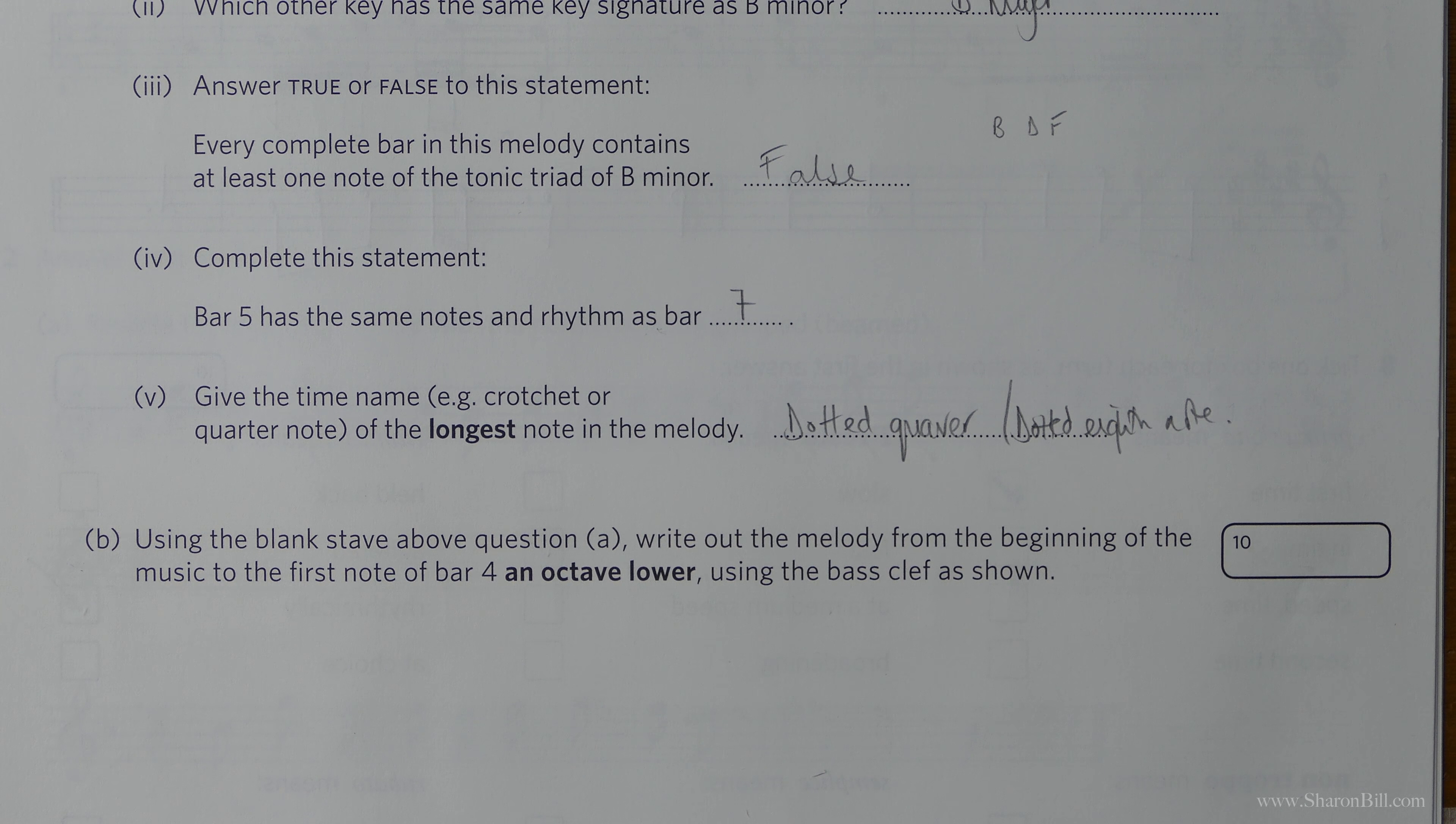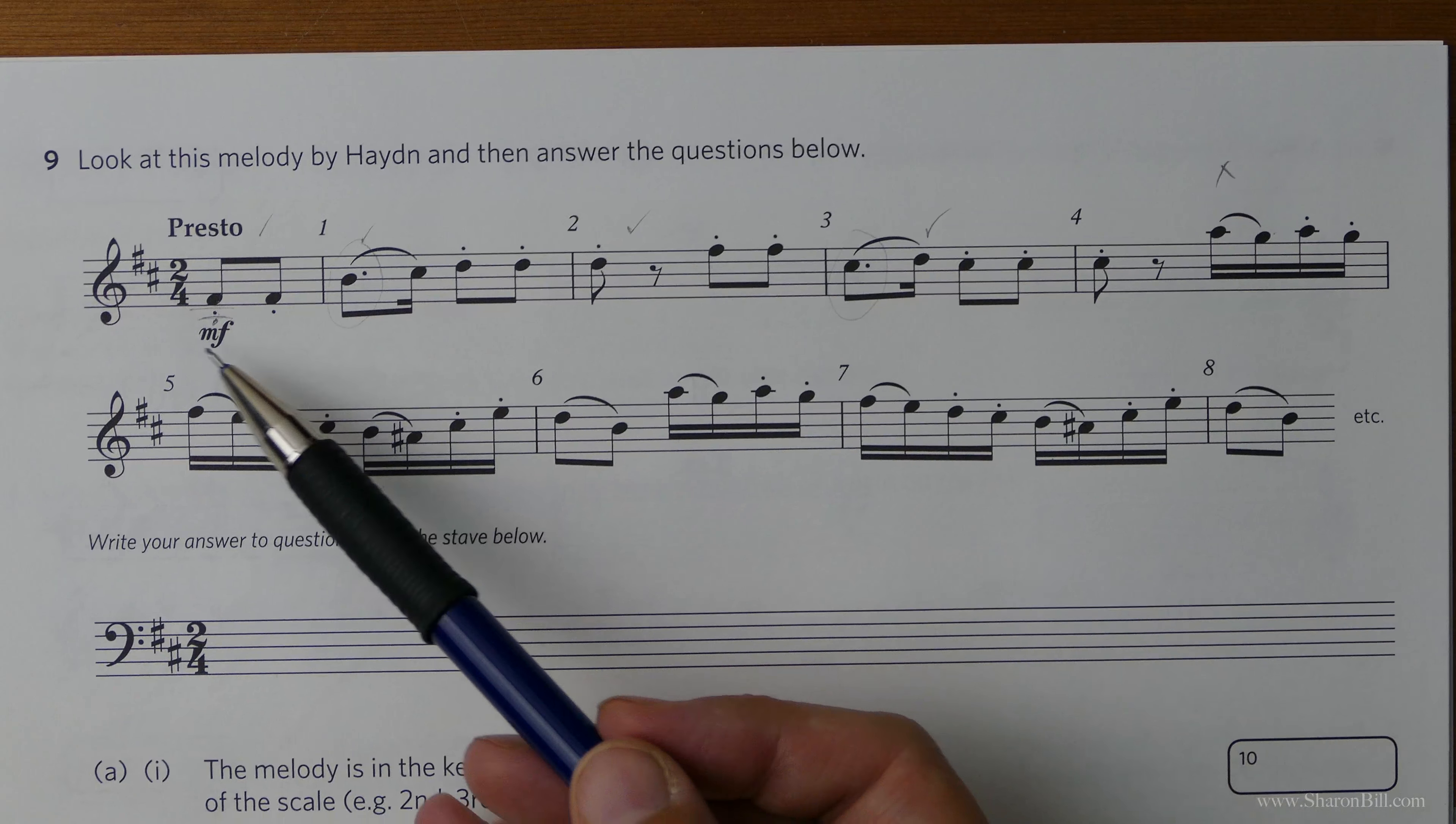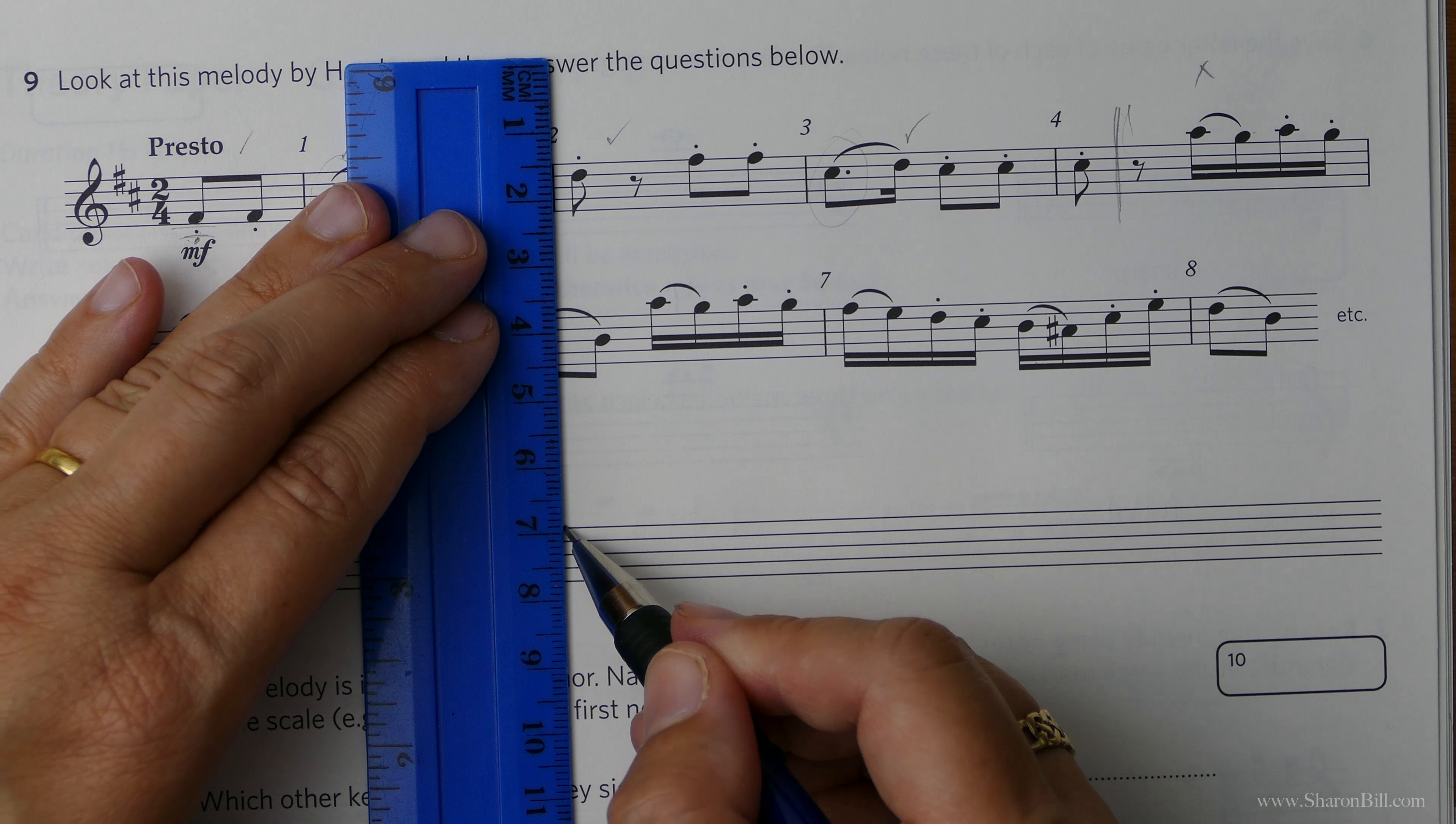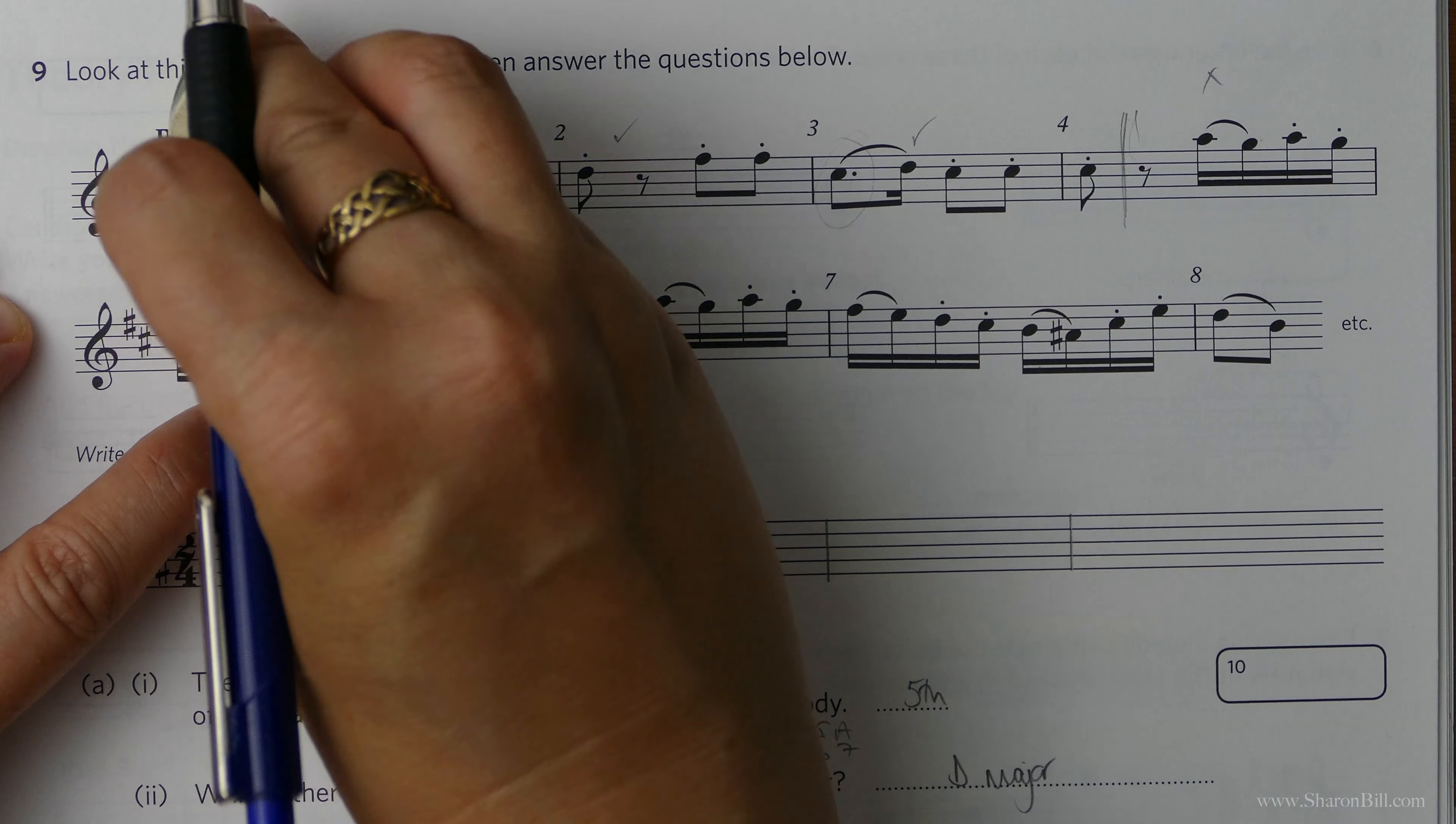The last part of this question, using the blank stave, write out the melody from the beginning of the music to the first note of bar four, but we've got to go an octave lower and change to the bass clef. First of all, I'm just going to map out my bar lines, just get all the nuts and bolts in place. So we're in the bass clef. Now the important thing here is to always relate to middle C. There's middle C at the moment.